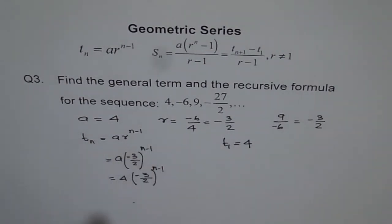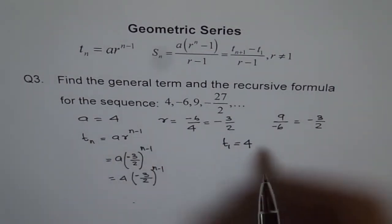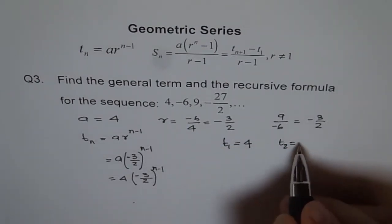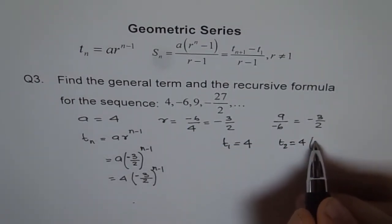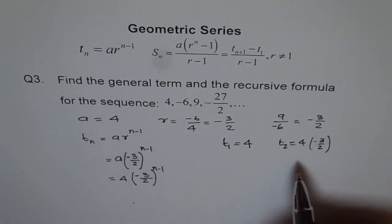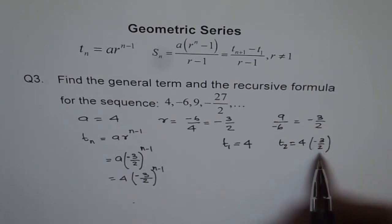How do you get the next term? So the second term you get how? Second term you get by multiplying 4 by minus 3 by 2. So thereafter, every term you get by multiplying previous term by minus 3 over 2.